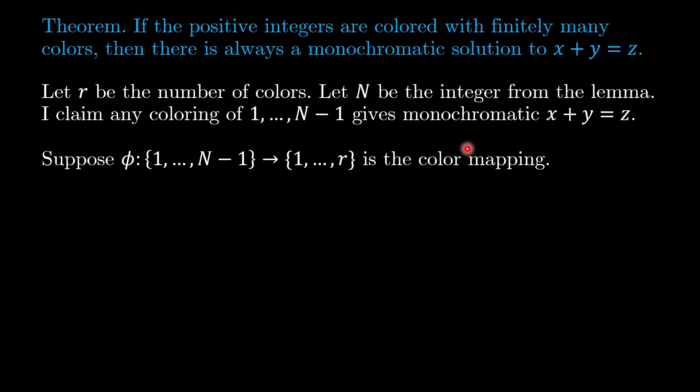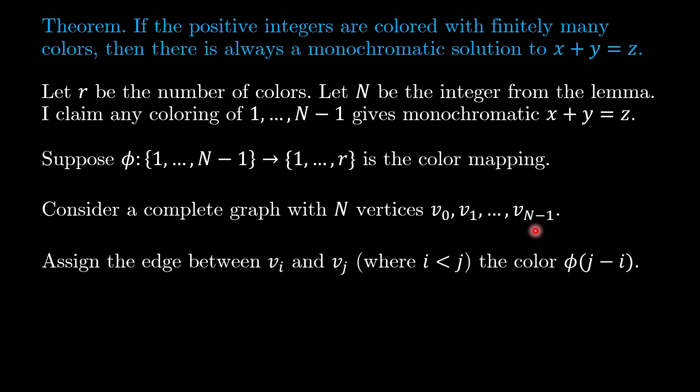So to do this, let us be given any coloring of 1 to N minus 1. For concreteness, I let phi be the function that maps the integer to the color. What we do is we consider a complete graph with N vertices labeled v_0 to v_{N-1}. And on this complete graph, how will I assign the coloring to the edges?